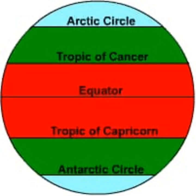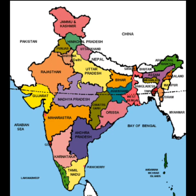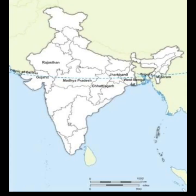The imaginary horizontal lines are called latitudes. The important latitudes are the equator, Tropic of Cancer in the north, Tropic of Capricorn in the south, Arctic Circle in the north, and Antarctic Circle in the south. The Tropic of Cancer at 23° 30' North passes through India and divides the country into almost equal parts.